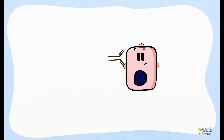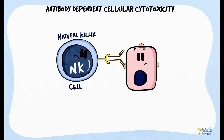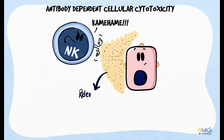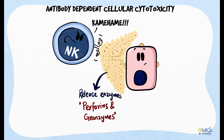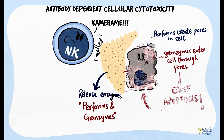Antibodies could also induce cell damage by a process called antibody-dependent cellular cytotoxicity. This occurs rarely and is mediated by cells like natural killer cells. Natural killer cells also possess an FC receptor, which binds to the FC portion of the antibody. This binding activates the natural killer cell to release enzymes called perforins and granzymes. Perforins create pores in the cell through which granzymes enter and cause apoptosis of the cell.